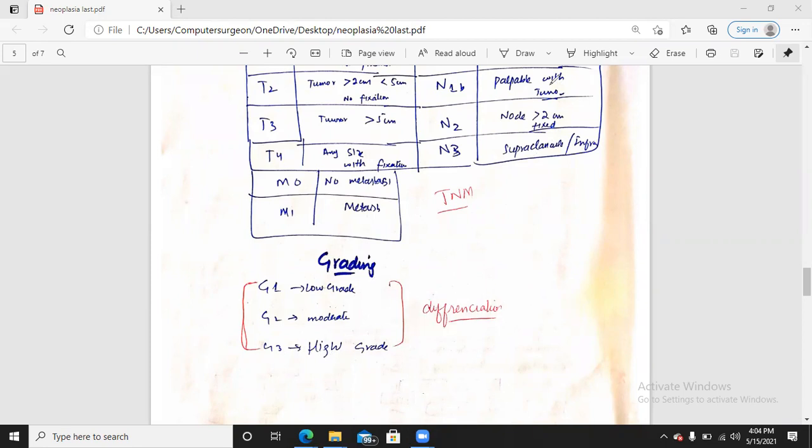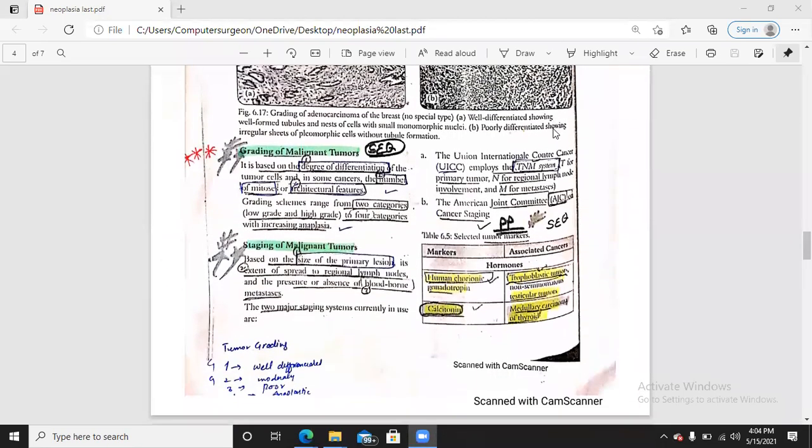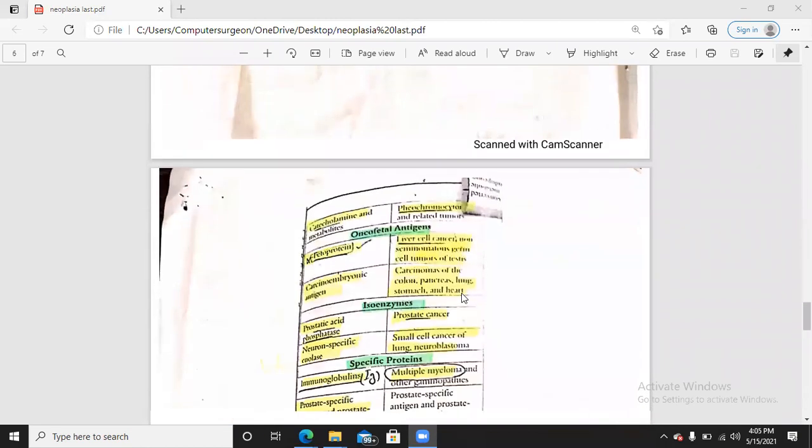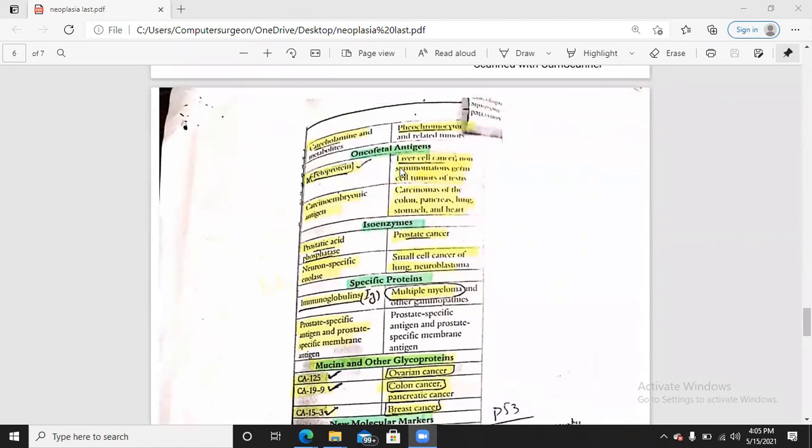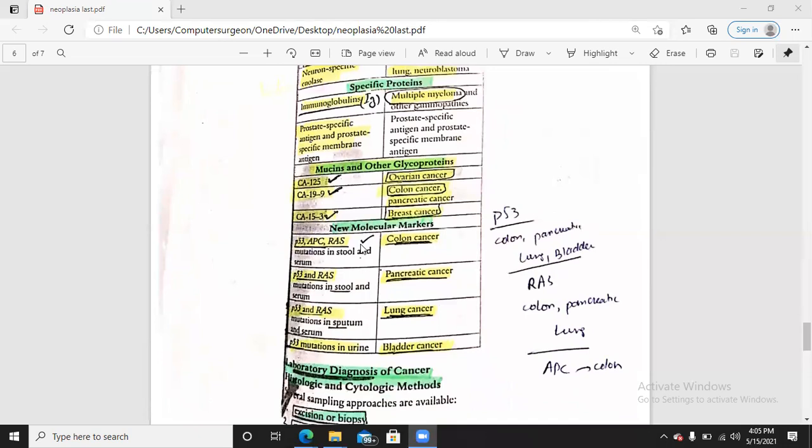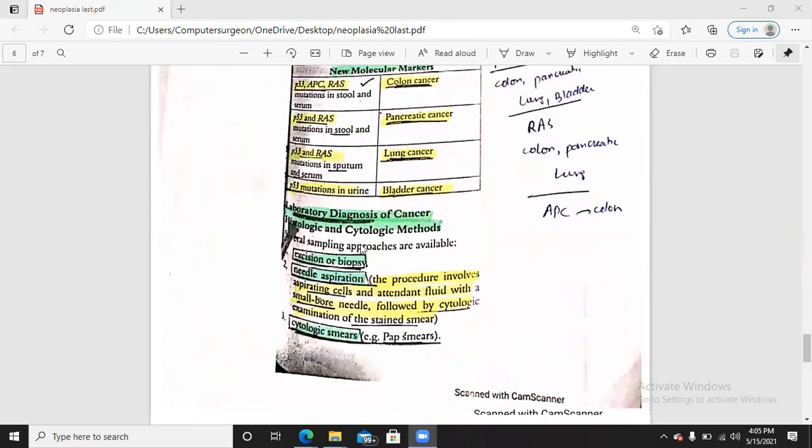Last topic which is tumor markers. Tumor markers basically for example we have to remember which are the tumor markers which are present and the tumor markers which are important like human chorionic gonadotrophin for trophoblastic tumor, calcitonin for medullary carcinoma, catecholamine for pheochromocytoma, alpha fetoprotein for liver cell cancer, which is different isoenzyme enzymes and these are all the markers and genes and everything which we can see here.